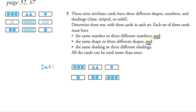Let's put those squares down and check. We need the same number or three different numbers — we have one, two, three, so that fits. We need the same shape or three different shapes — they are all squares, so same shape. And for shading, these are all solid, so we have the same shading. With the same shape, same shading, and three different numbers, we've checked all three attributes. This is a valid set.